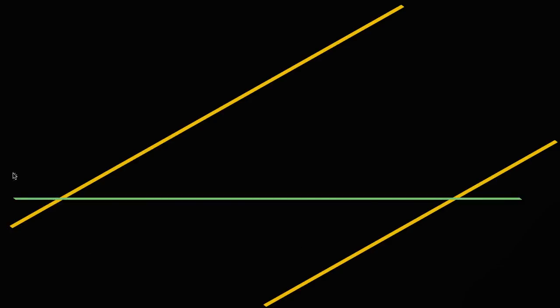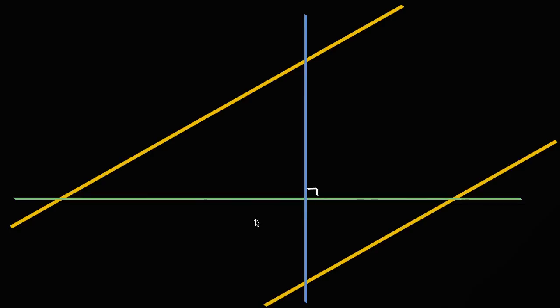And now I'm going to draw some transversals here. First let me draw a horizontal transversal, and then let me do a vertical transversal. I'm assuming that the green one is horizontal and the blue one is vertical, so we assume that they are perpendicular to each other — that these intersect at right angles.